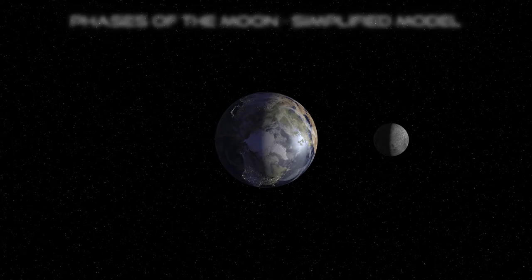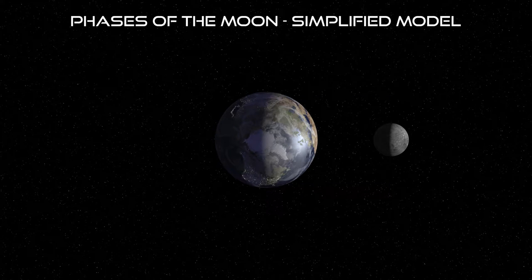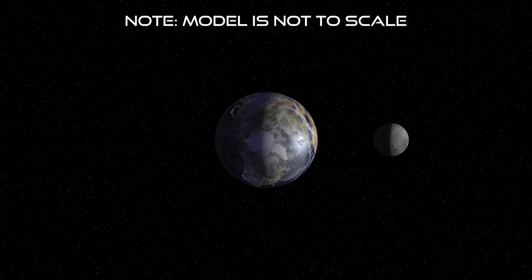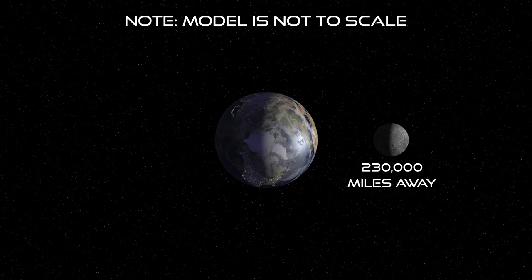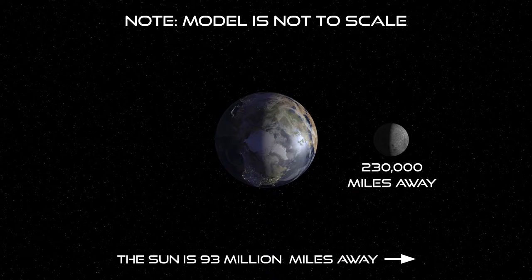Let's look at a simplified model keeping the Earth from moving around the Sun, and the Sun from moving within the galaxy. Only the Moon will move in this system. Note it isn't to scale — the Moon is some 230,000 miles away, while there's 93 million miles between us and the Sun.